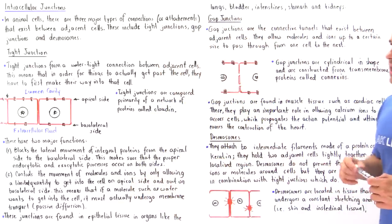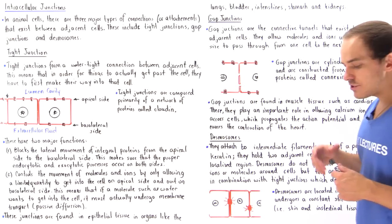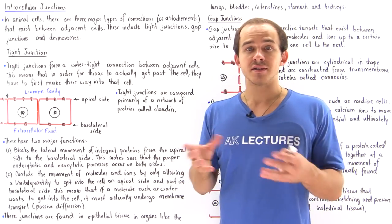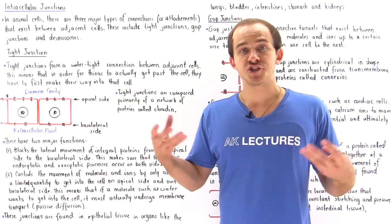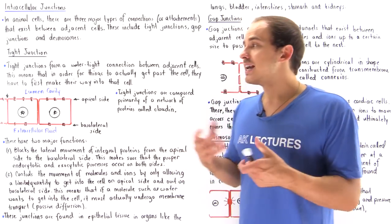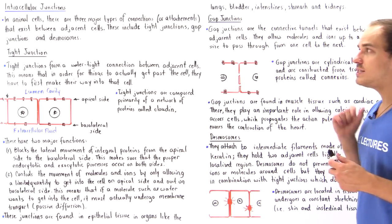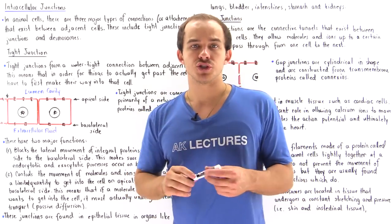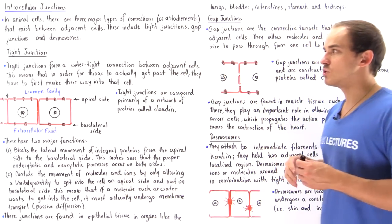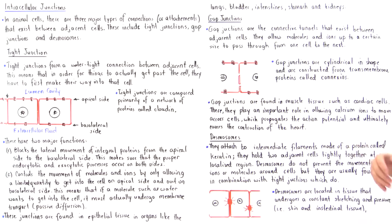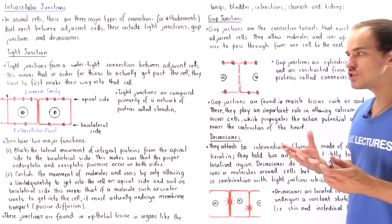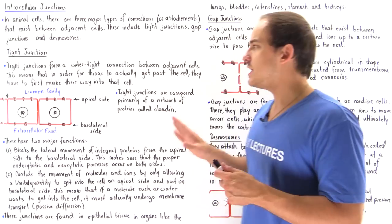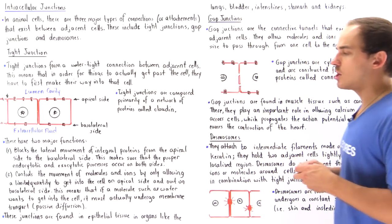In animal cells, there are three major types of connections or attachments — three major ways by which cells can connect to one another. These include tight junctions, gap junctions, as well as desmosomes. Let's discuss what each one looks like, what it is composed of, and what the function of each type of junction is.